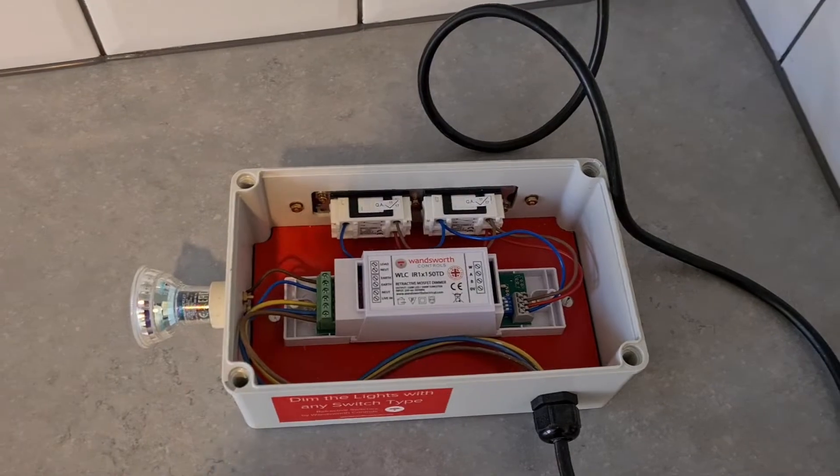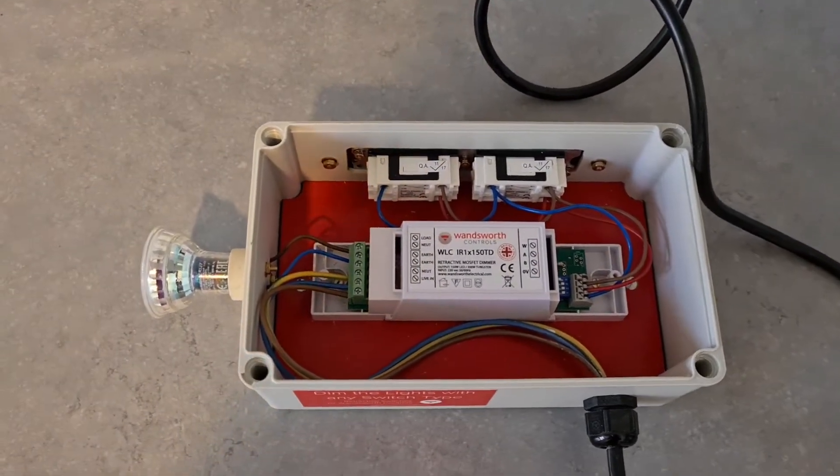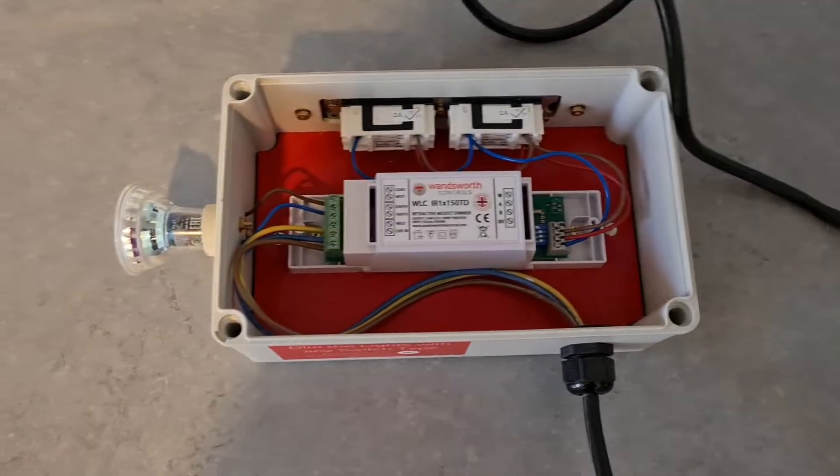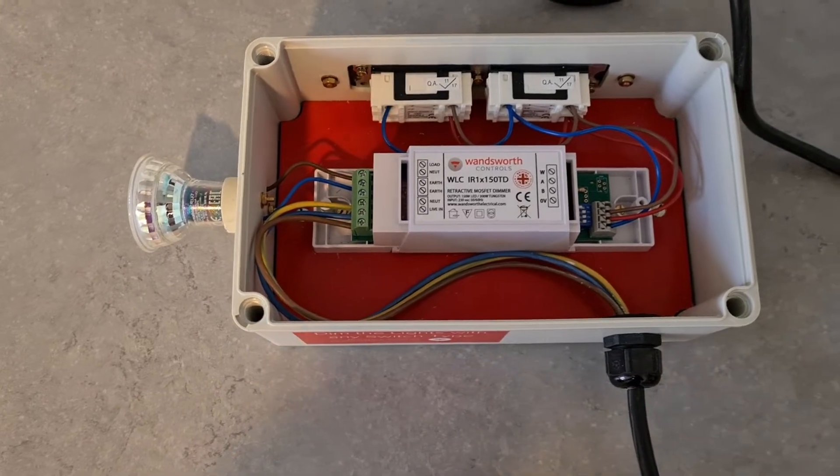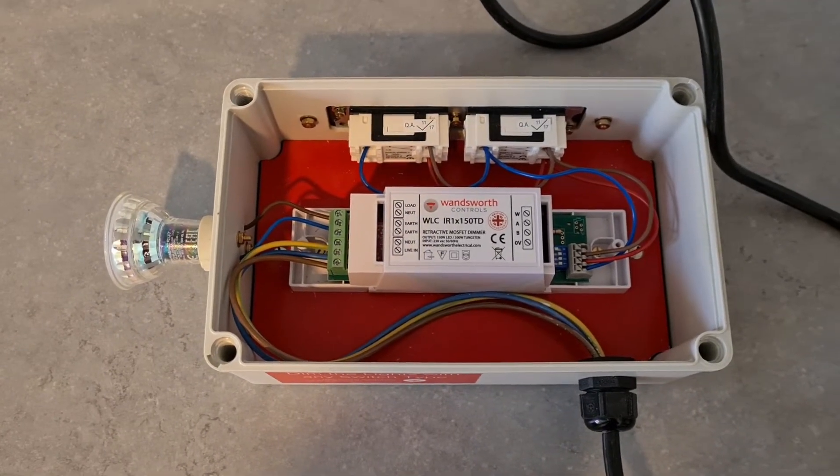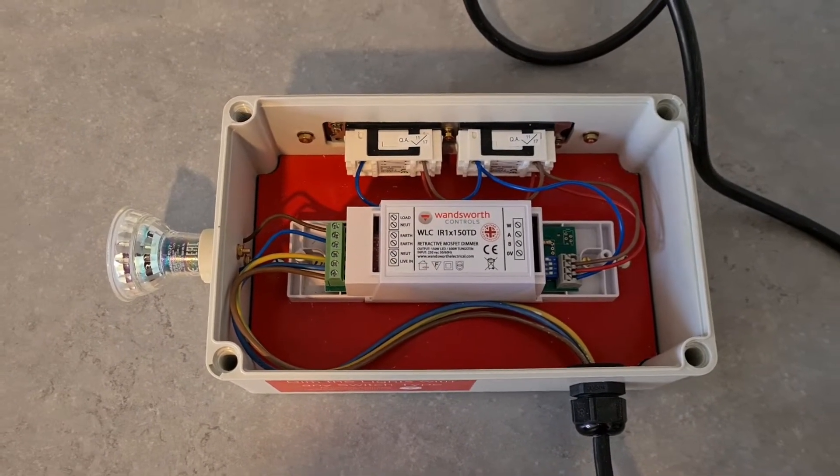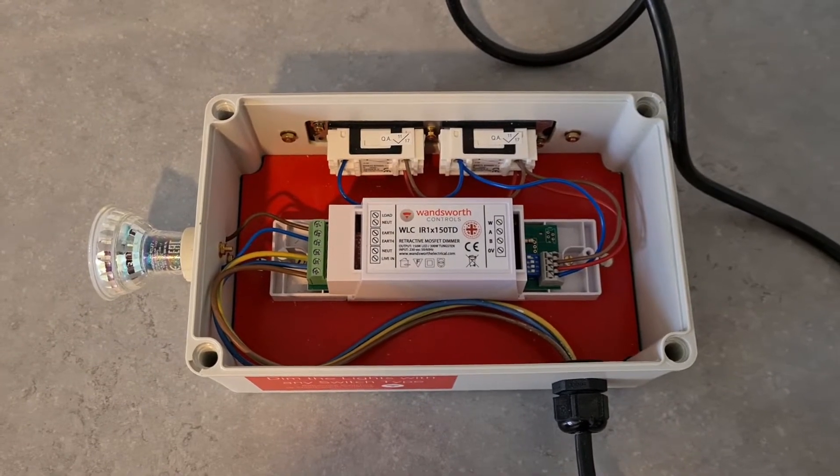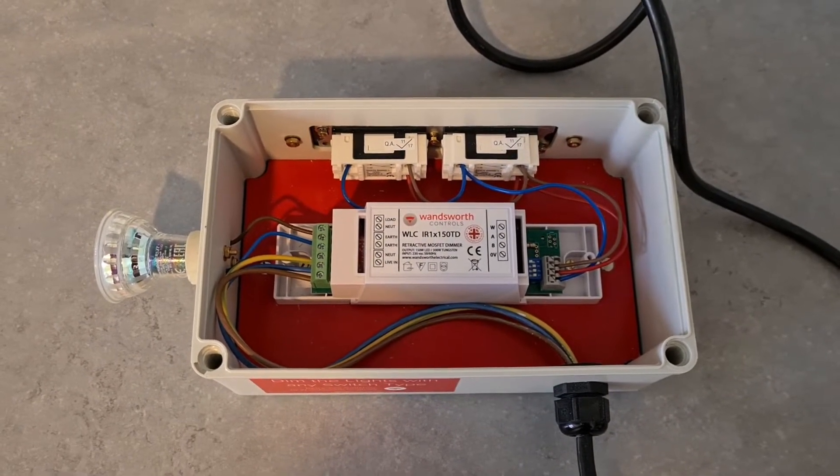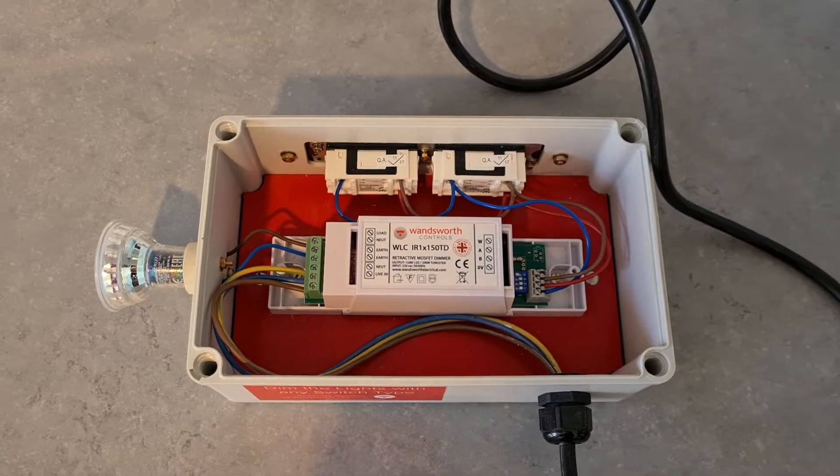Hello there guys, just a quick video demonstration today based on retractive dimming and we're looking at the Wandsworth inline retractive dimming module. It's a single channel device rated at 150 watts, designed to control LED lighting.